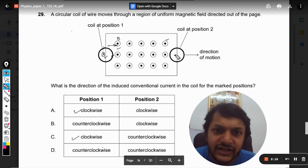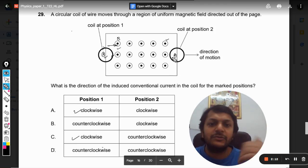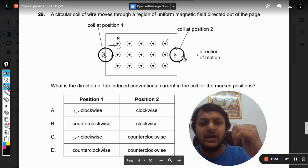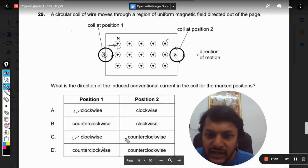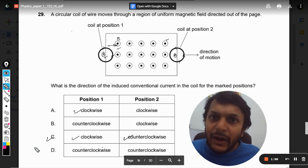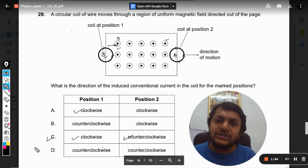So the magnetic field here should be like this. So how is it possible? It is possible if the current is in counterclockwise direction. I believe you know what I mean to say. So the current in the second case will be counterclockwise, so the answer will be C.